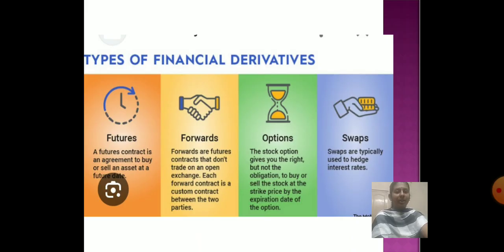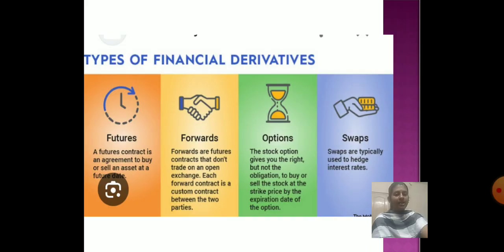There are four major types of financial derivatives: futures, forwards, options, and swaps. A future is a contract — an agreement to buy and sell an asset at a future point in time. A forward is a future contract that does not trade on an open exchange; each forward contract is a customised contract between two parties. An option gives you the right, but not the obligation, to buy and sell a stock at a strike price by the expiration date. A swap is typically used to hedge an investor's risk.